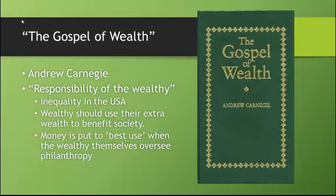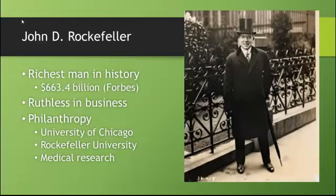Another example is John D. Rockefeller. He owned Standard Oil and is the richest man in all of history, worth $663.4 billion. He was known to be incredibly ruthless in business and drove all of his competitors out of business. But at the same time, he founded two universities and contributed to medical research that ended up solving a number of diseases in the 20th century. So the legacy of these guys is undecided — are they ruthless robber barons? Are they philanthropists? The debate rages on in American history about how we should think about these industrialists.